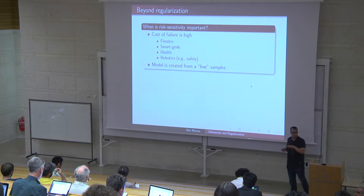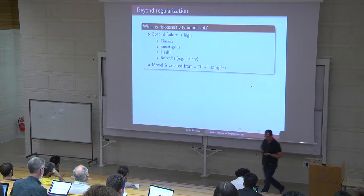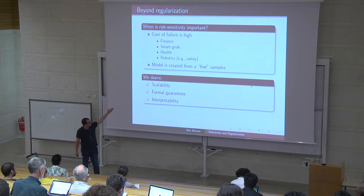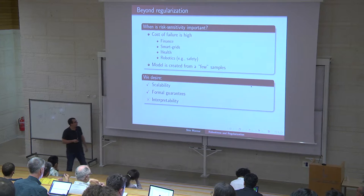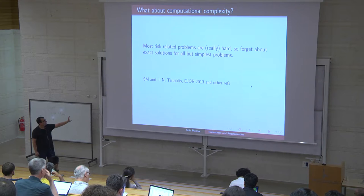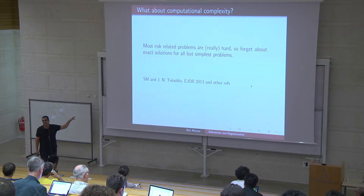Besides generalization, there are pretty good reasons to consider risk, especially in applications. We want scalability to solve large problems, we want formal guarantees, and we would like interpretability — which we don't have, but would also like. A note on truth in advertising: everything from this point on will be very hard computationally, so let's ignore complexity for the rest of this talk.